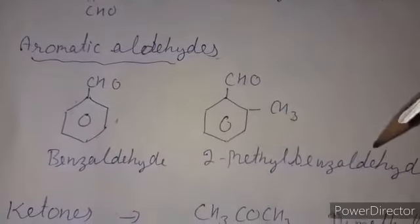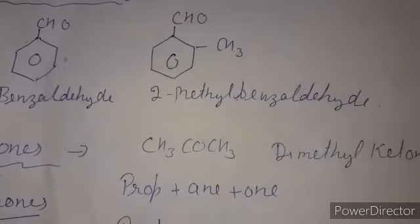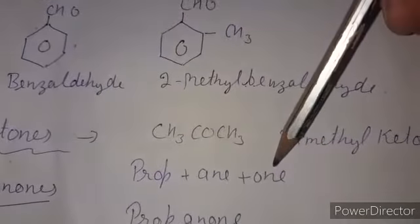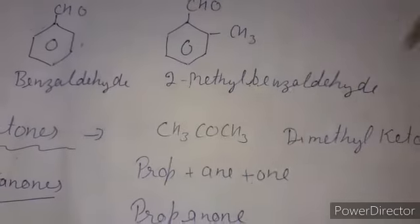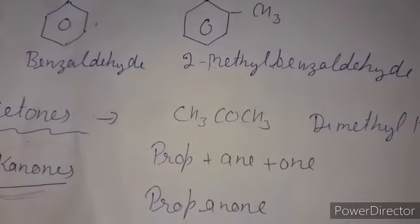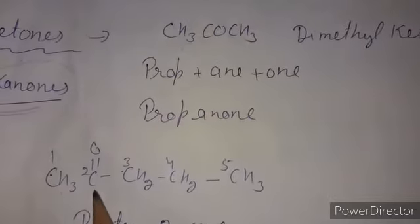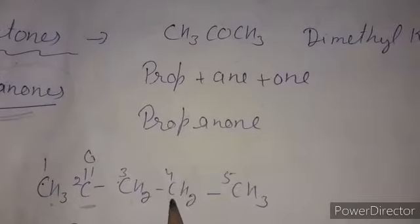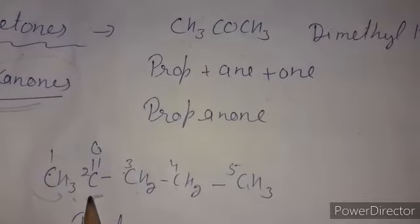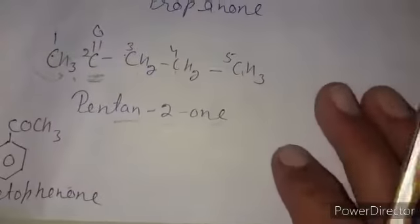In the case of ketones, the common name of dimethyl ketone is acetone. Using IUPAC: 'prop' plus 'an' plus 'one' gives propanone. These are commonly called alkanones. For a five-carbon chain we number from the closer end — one, two, three, four, five — giving pentan-2-one. The common name for the aromatic ketone is acetophenone.